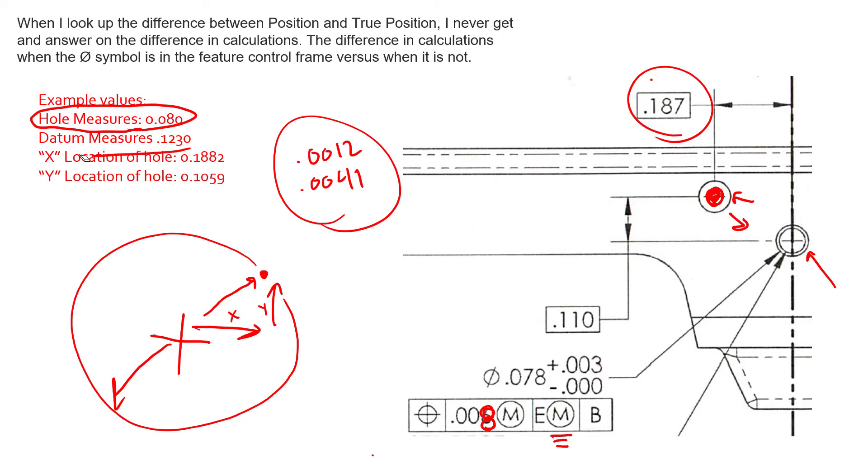And again, our datum feature measured at 0.123, and so any deviation it has away from its MMC as a datum feature is allowable datum shift. But the important thing to remember with datum shift is it's a simultaneous requirement with anything else that shares this datum reference frame.